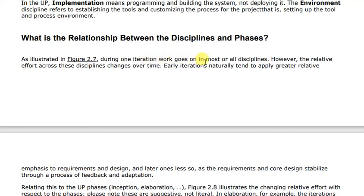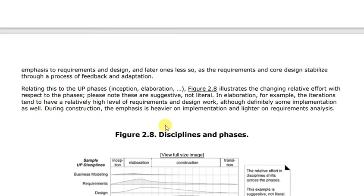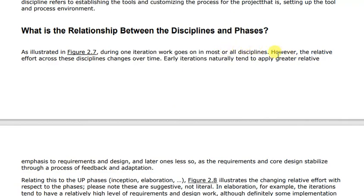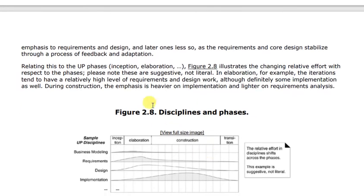During one iteration, work goes on in most or all the disciplines. In every phase they are working on all disciplines. However, the relative effort across disciplines changes over time. Early iterations naturally tend to place greater relative emphasis on requirements and design. Later on, because the requirements and core architecture are stabilized, work shifts to feedback, adaptation, and handling just a few remaining requirements.